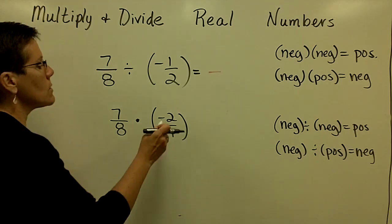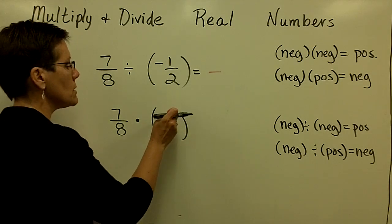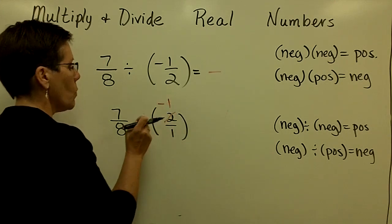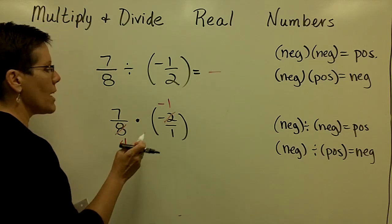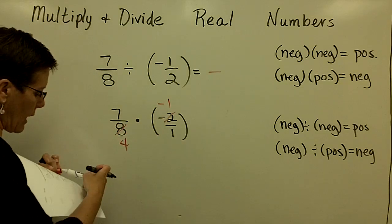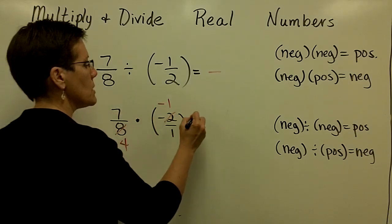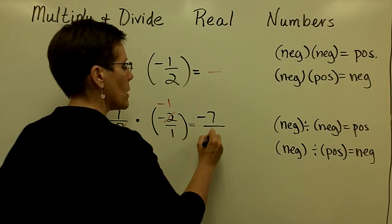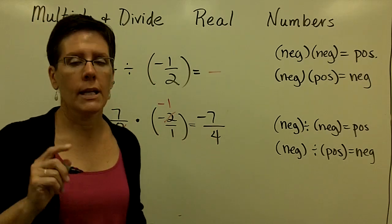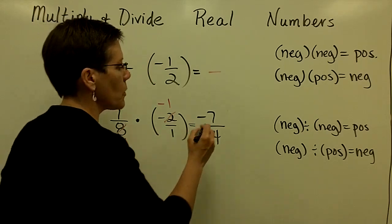And then I'm going to go ahead and reduce this. 2 goes into that negative 2 one time and into that 8 four times. I'm just keeping that sign so I don't forget that my answer is going to be negative. And finally, 7 times a negative 1 is a negative 7, and 4 times 1 in the denominator is 4. And I can leave that answer as a negative 7 fourths.